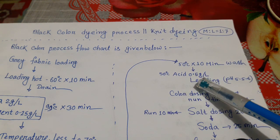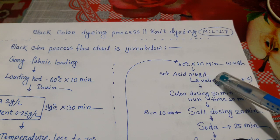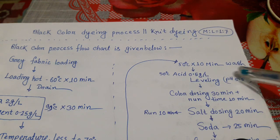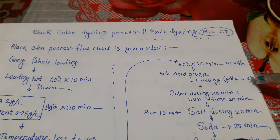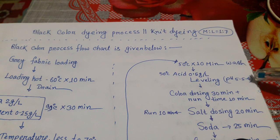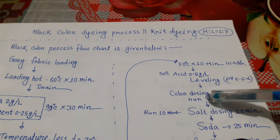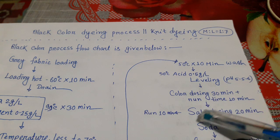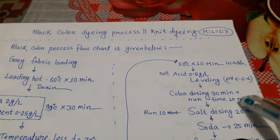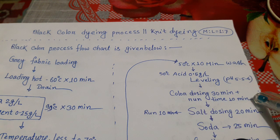Then wash at 50 degrees centigrade for 10 minutes. Again add acetic acid at 0.5 grams per liter at 50 degrees centigrade — pH needs to be kept at 5.5 to 6 before using leveling chemicals. Then color dosing for 30 minutes and runtime for 10 minutes.